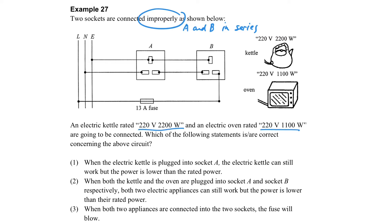So what will happen? Firstly, if we connect the kettle to one socket, socket A, can it work? Do you notice that the circuit is open because socket B is not connected to anything? So it won't work.